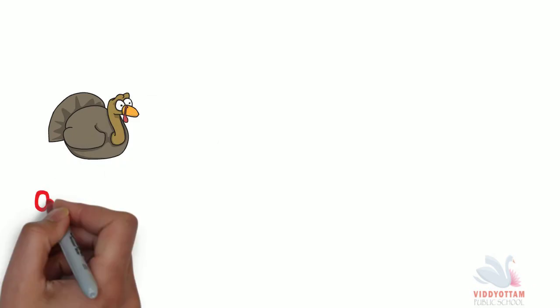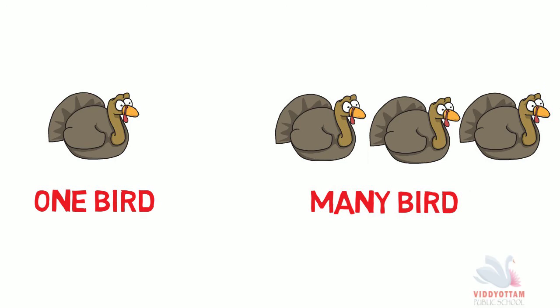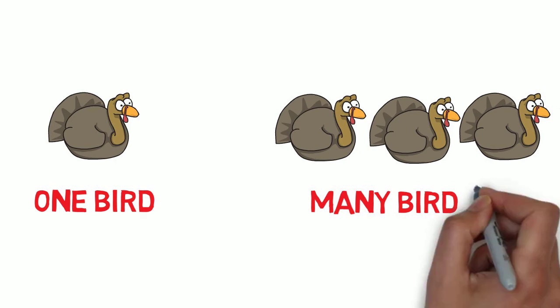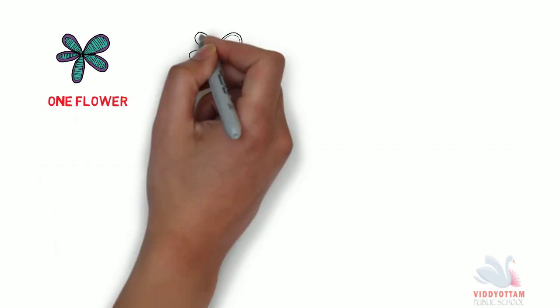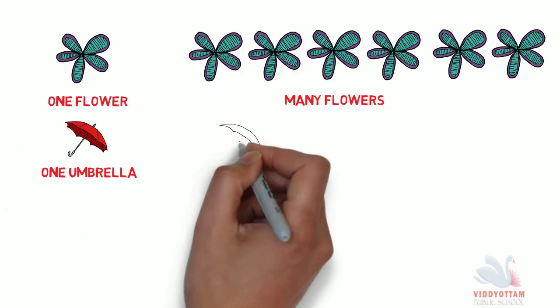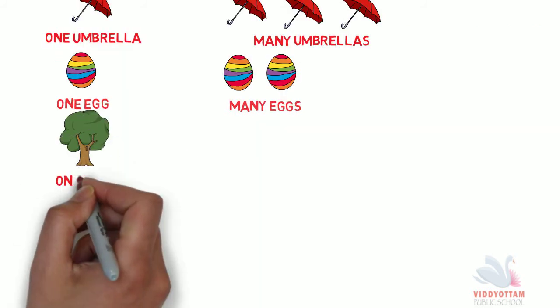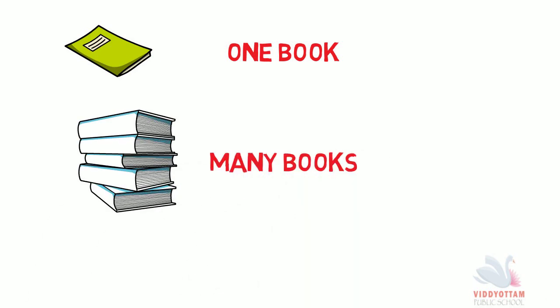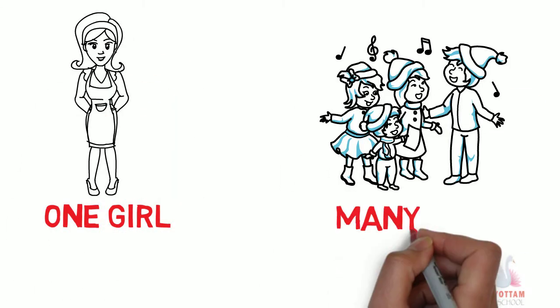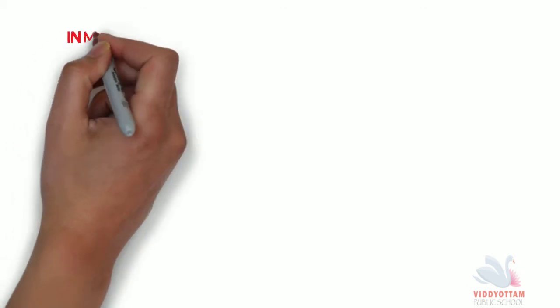Similarly, one bird, to refer to many birds, we just add S with the main word that is bird. Likewise, one flower, many flowers; one umbrella, many umbrellas; one egg, many eggs; one tree, many trees; one book, many books; one girl, many girls. You see, all the words in the plural form have S at the last.